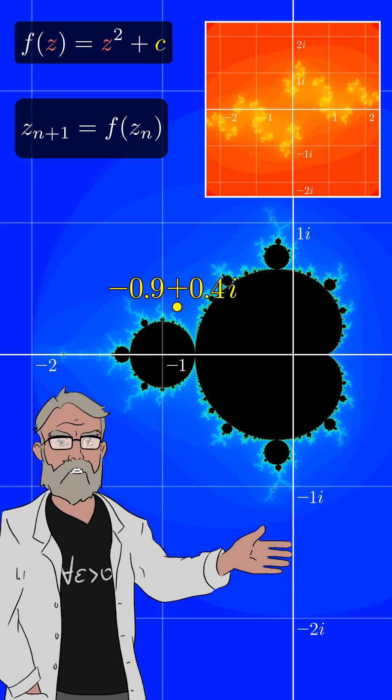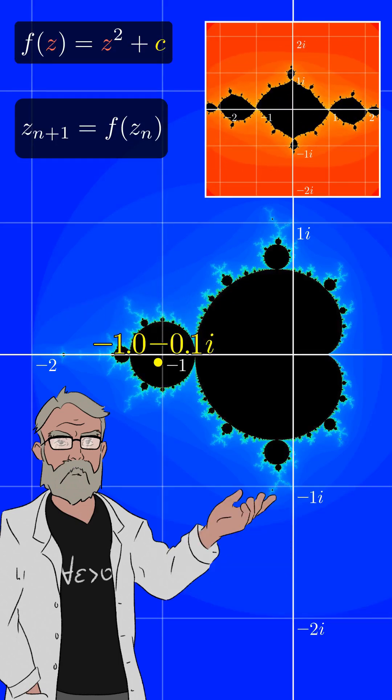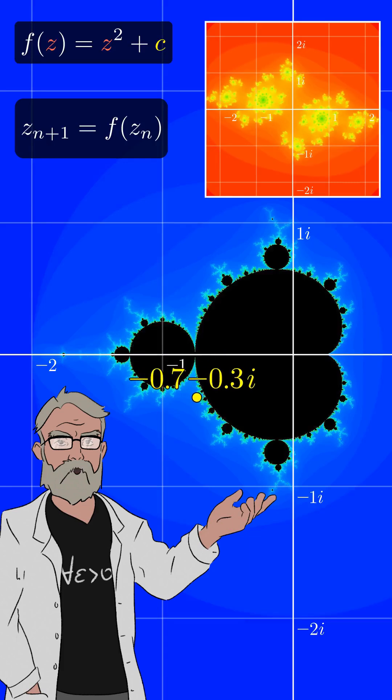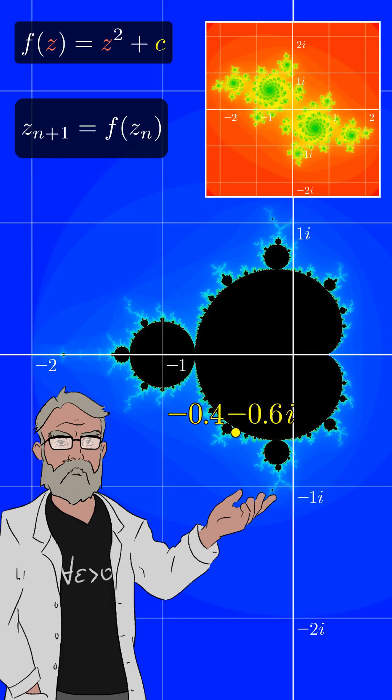By changing the value of c, we reveal incredible patterns and behaviour. In fact, many of the intriguing properties of the Mandelbrot set are actually derived from the Julia set.